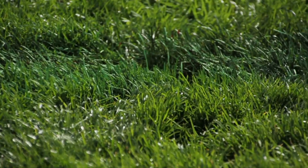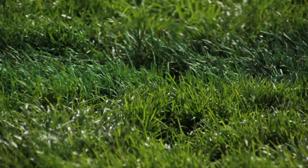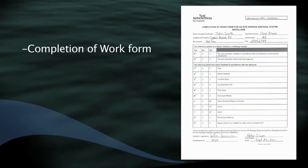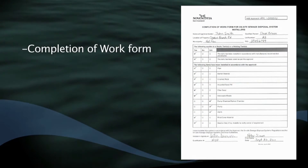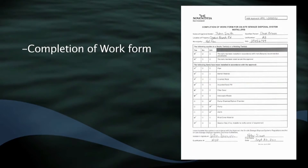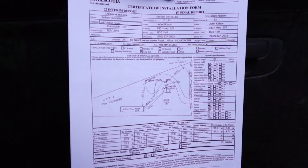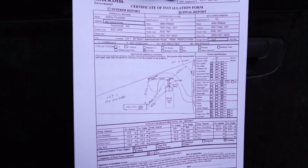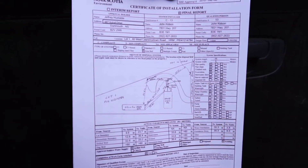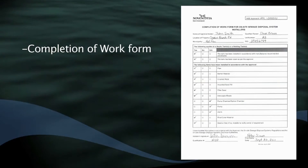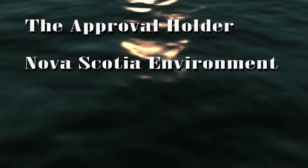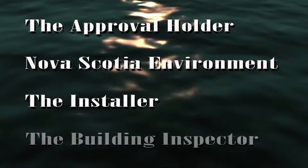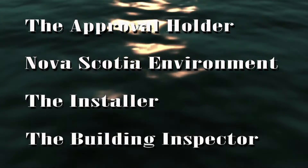When the system is complete, including seed or sod, the installer must complete a completion of work form and provide a copy to the qualified person. After the final inspection, the qualified person will complete the certificate of installation form and send copies to the approval holder, Nova Scotia Environment, the installer, and the building inspector.